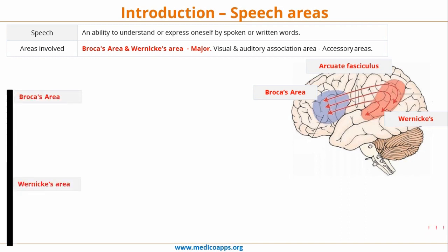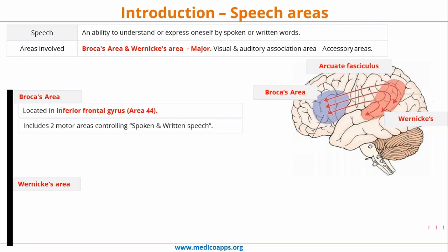Broca's area is located in the inferior frontal gyrus, also called area 44, as you can see in the diagram. It includes two motor areas: one motor area controls the spoken part of speech and the second motor area controls the written part of speech. Essentially it functions as the center for the motor part of speech and sentence formation — whatever the final motor output will be for speech and sentence formation, that will be taken care of by Broca's area.